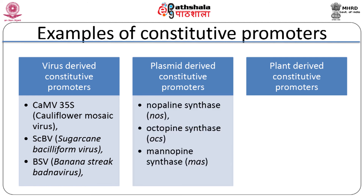The second category is plasmid-derived constitutive promoters. Generally, their origin is from Ti or Ri plasmids of Agrobacterium tumefaciens and Agrobacterium rhizogenes respectively. As these are plant pathogens, some of the plasmid-bound genes are heavily transcribed by plant transcription machinery, making their promoters good candidates for driving constitutive expression in engineered plants. This includes promoters of nopaline synthase (NOS), octopine synthase (OCS), and mannopine synthase (MAS) genes.